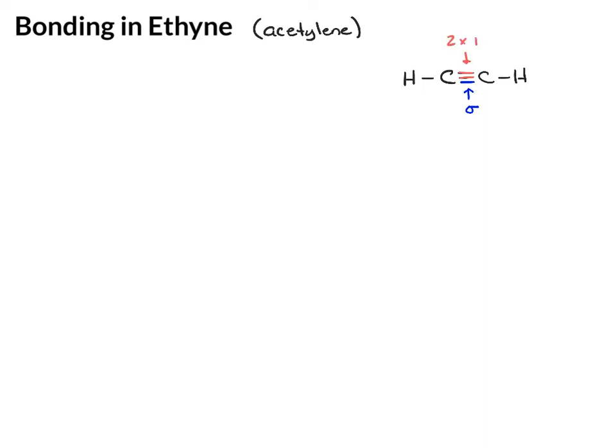So we have two pi bonds. Remember that a pi bond is when you have two p-orbitals overlapping. For one pi bond, we'll have two p-orbitals with a side-to-side overlap. For the second pi bond, we'll have another two p-orbitals with a side-to-side overlap. So what that means is each carbon must have two p-orbitals.